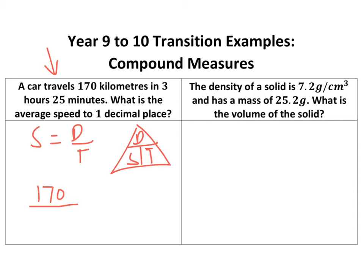Three hours is 180 minutes plus the 25 is 205. That will give you kilometers per minute, and we want to know how far you go in an hour. There's 60 minutes in an hour.